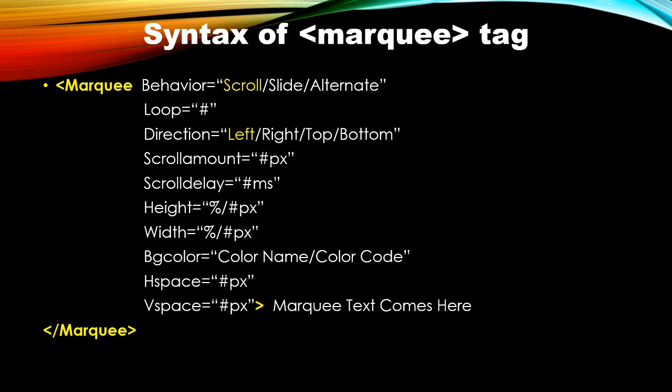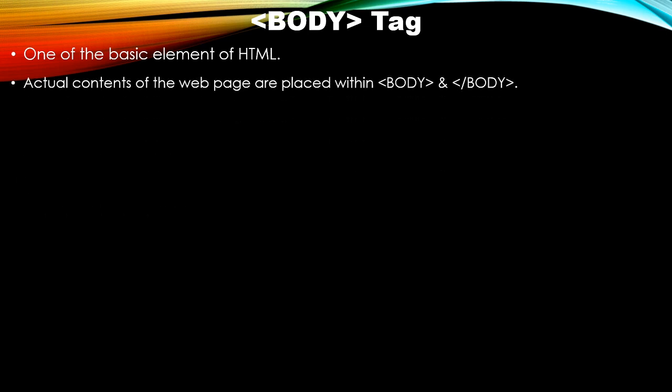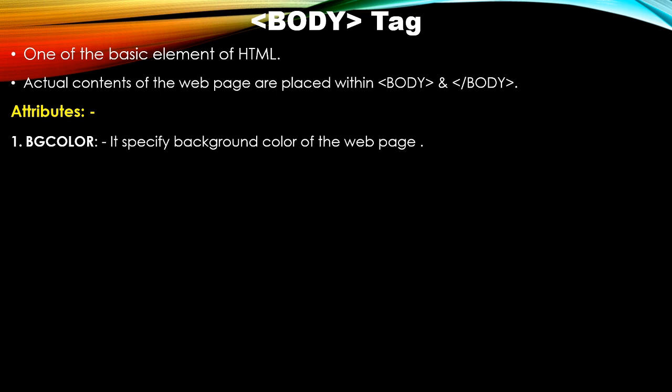Another tag is the body tag. The body tag is one of the basic elements of HTML, and all actual content you want to display as output is placed within this tag. The body tag is a paired tag and its closing is compulsory. The first attribute is bgcolor — it specifies the background color of the web page; the default is white.